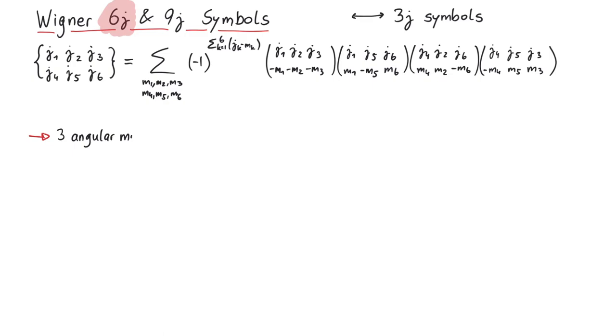Now how do we use those 6j symbols? Imagine you have three angular momenta, j1, j2, and j3. There are two ways to couple them. You could either couple j1 and j2, and have j12, then couple this with j3, or you could first couple j2 with j3, to j23, and then couple this with j1.